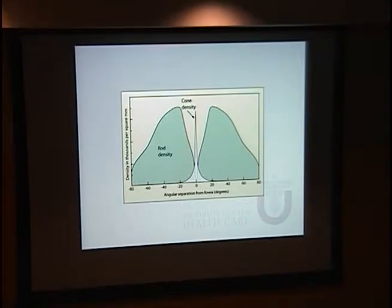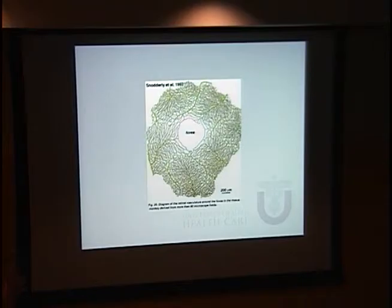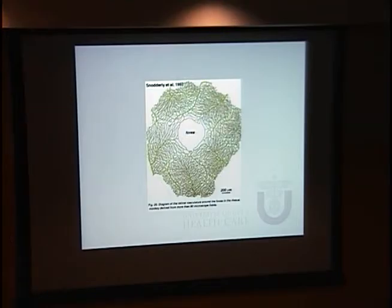In order to make room for all of these cones, certain adaptations had to take place. The primary one is that the fovea has been excluded of retinal vasculature. The only vasculature remaining in the fovea is the choroidal vasculature from the posterior surface. This becomes really important.